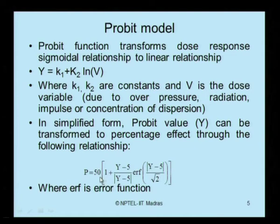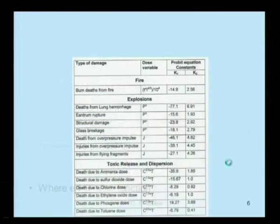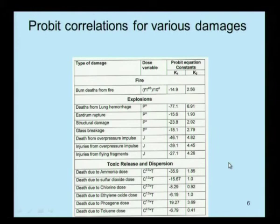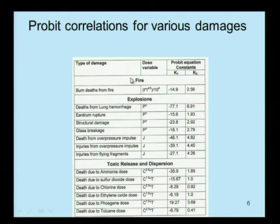In this case, ERF is what we call the error function. The probit correlations for various damages — to estimate k1 and k2 — are given for fire, explosions, and toxic release models from this table. The type of damage, the dose variable value, and the probit equation constants k1 and k2 are all available in tabular form.